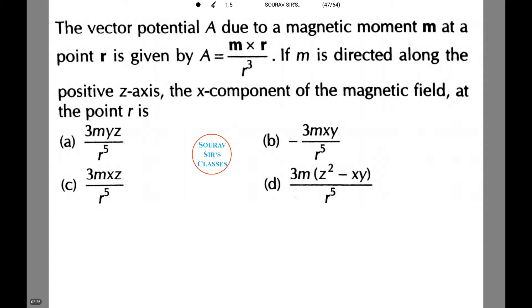The vector potential A due to magnetic moment m at a point r is given by A equals m into r by r cube. If m is directed along the positive z axis, the x component of the magnetic field at point r is.